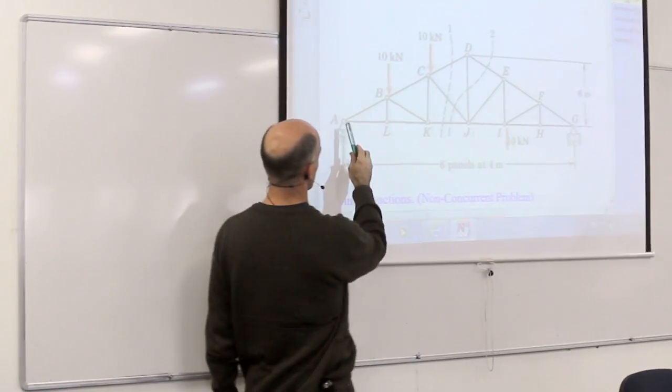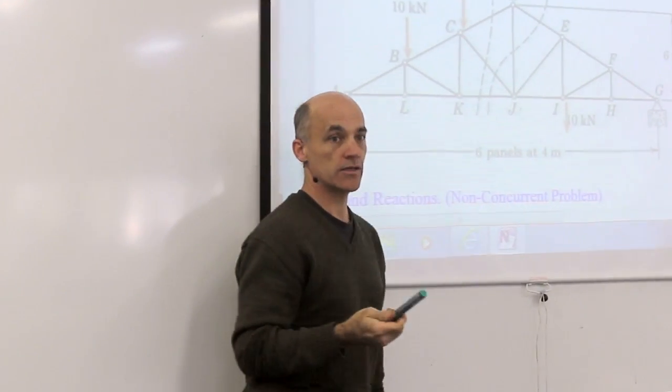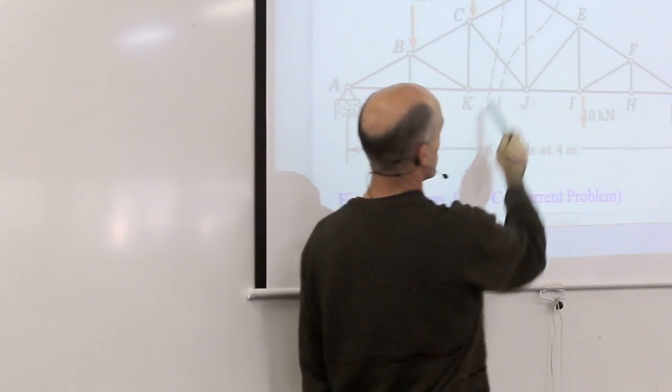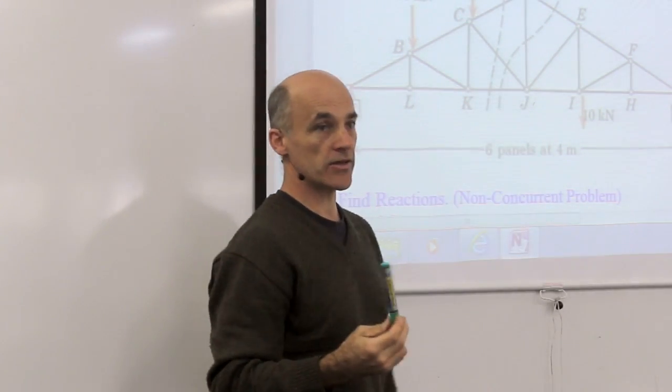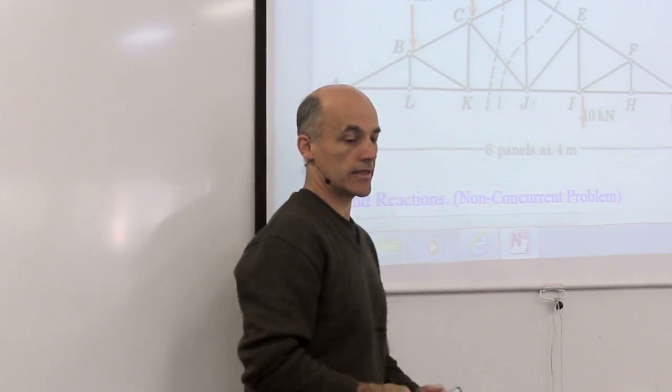The method of joints requires you to work from one joint to the next. Every time you solve one joint, that will help you get information to go to the next joint. If I was in a large truss and I'm trying to find the forces in the middle of the truss, using the method of joints I'd have to go A, B, L, work my way across the truss until finally I get there.